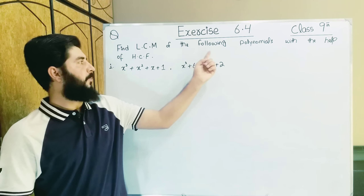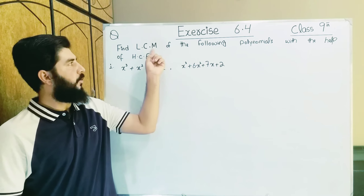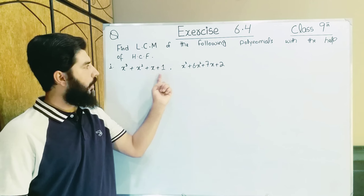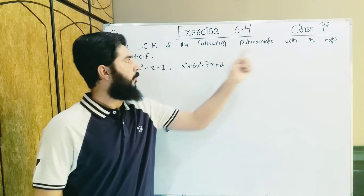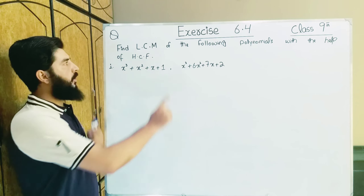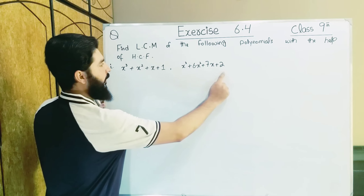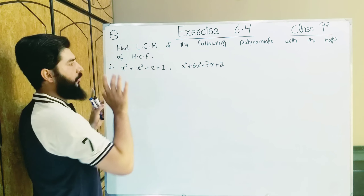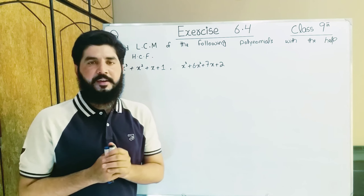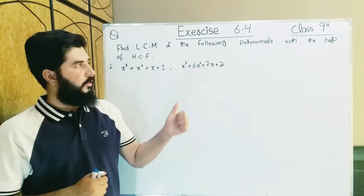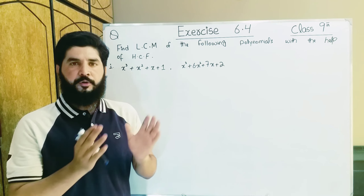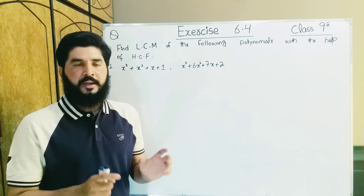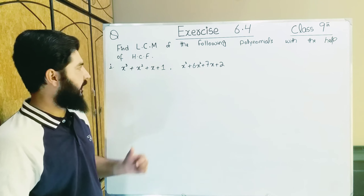We have to find the LCM of the following polynomials — one polynomial and the other — with the help of HCF. In the previous exercise we applied the same method as here, with slight changes. You will not need to be confused by this question.